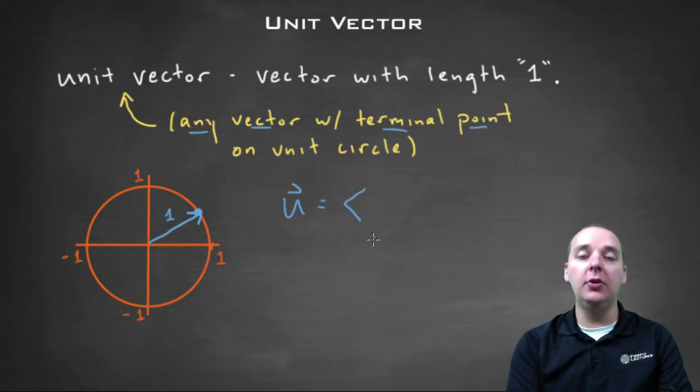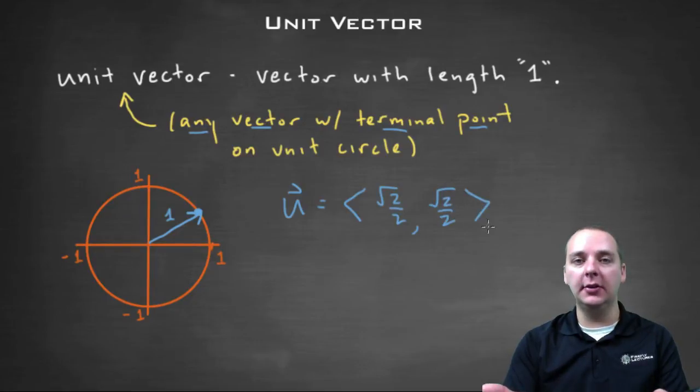So an example of a unit vector might be like root two over two, comma root two over two. I know that's a unit vector because that terminal point is on the unit circle.